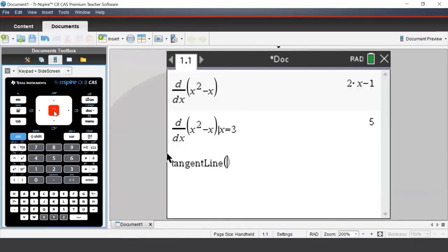The tangent line command will find the equation of a tangent line for a curve at a given point. To use this command, we first must enter our expression. So again, we'll enter in x squared minus x, then enter a comma, then enter the point at which we wish to find the tangent line.